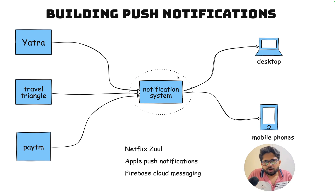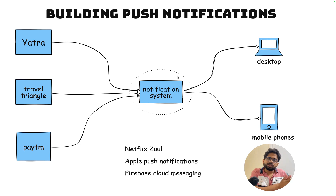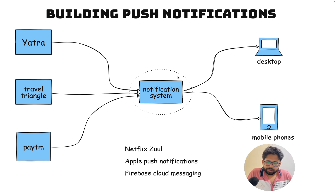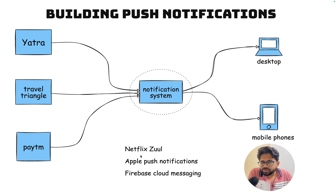In this video, I'm going to talk about the things a notification system should take care of when they want to scale, because there are millions of devices which would want to communicate with a notification system and you want to keep the devices lightweight. I've taken the example of Netflix Joule — the Netflix Joule push notification system — and I'll refer to their talk as well.